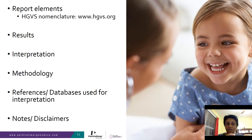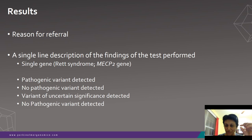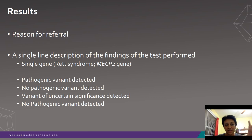The key reporting elements include: results, interpretation, methodology, references and databases used for interpretation, and notes and disclaimers. Starting with results — it is very important that the clinical information provided to the laboratory appears at the top of the report, as it is the basis of interpretation. A single line description of findings should state whether a pathogenic variant was detected, a variant of uncertain significance was found, or no pathogenic variant was detected.